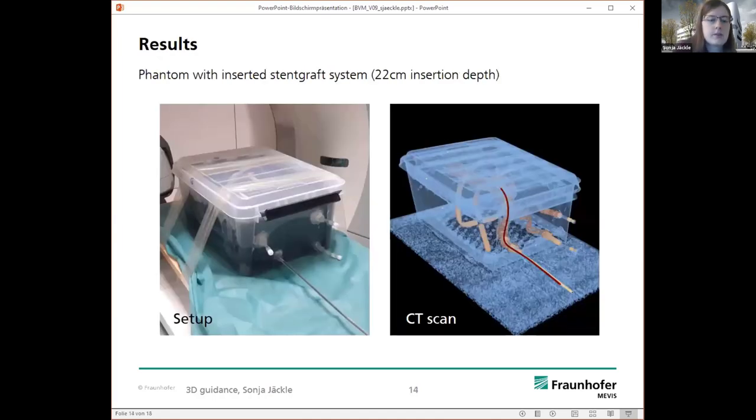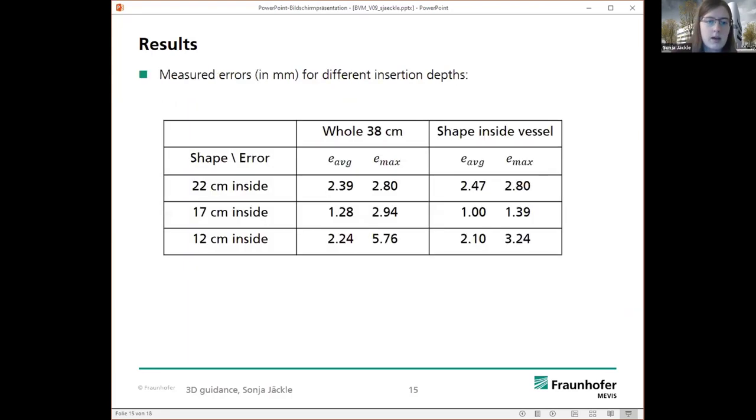So, how does it look like? On the left side, we can see the setup where we have inserted our stent graft system approximately 22 centimeters. And on the right side, we see the corresponding CT scan, and then we can observe that the shape obtained with our guidance approach here in red is looking very good. It's near the ground truth, you can see here, and it looks really promising. So, but what's about the accuracy, the errors?